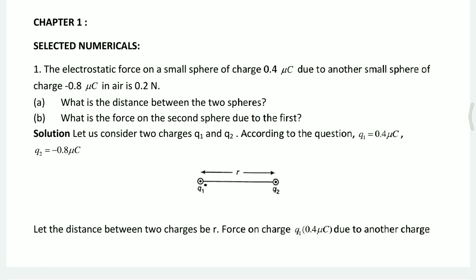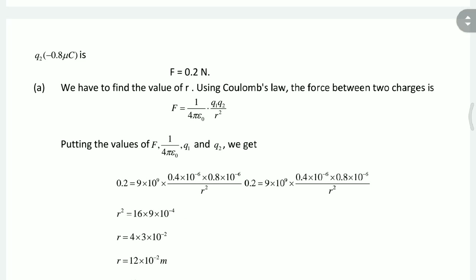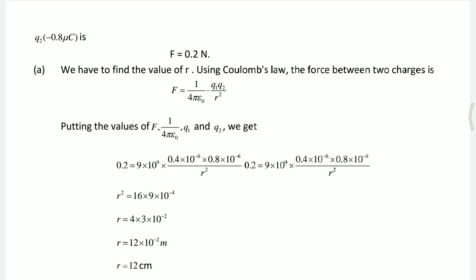The first question is about electrostatic force. The given values are: force is 0.2 Newton, one charge is 0.4 microcoulomb and the other is minus 0.8 microcoulomb. We need to find the distance. We put these values into Coulomb's formula, which is F equals 1 by 4 pi epsilon naught into q1 into q2 upon r squared.